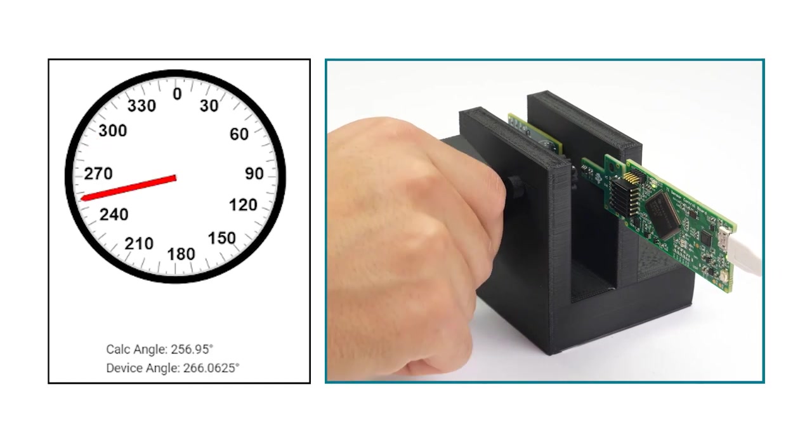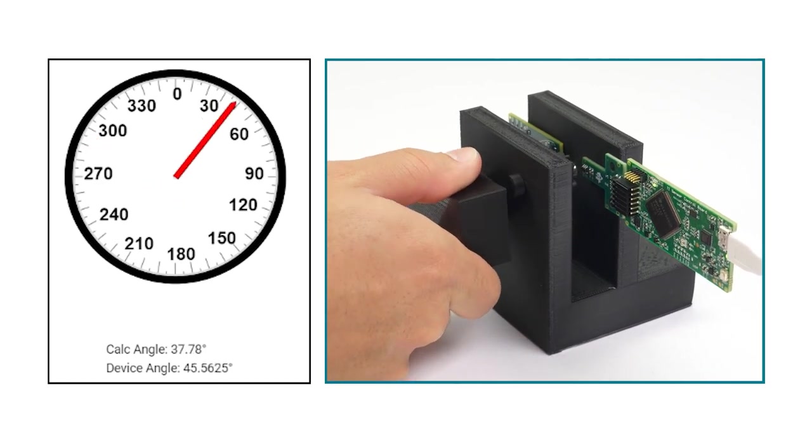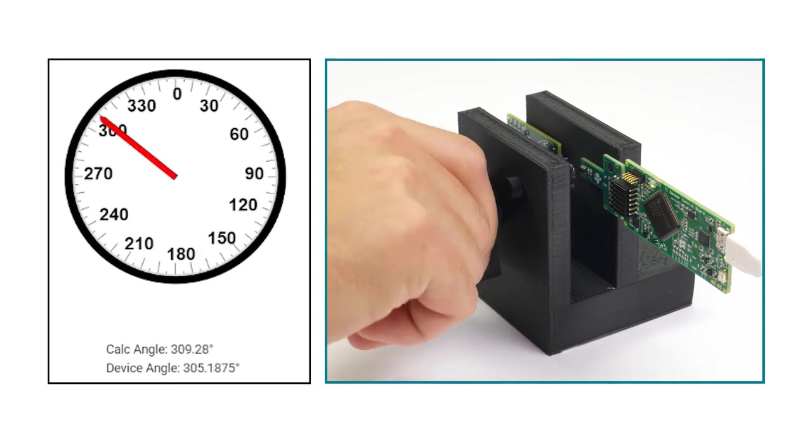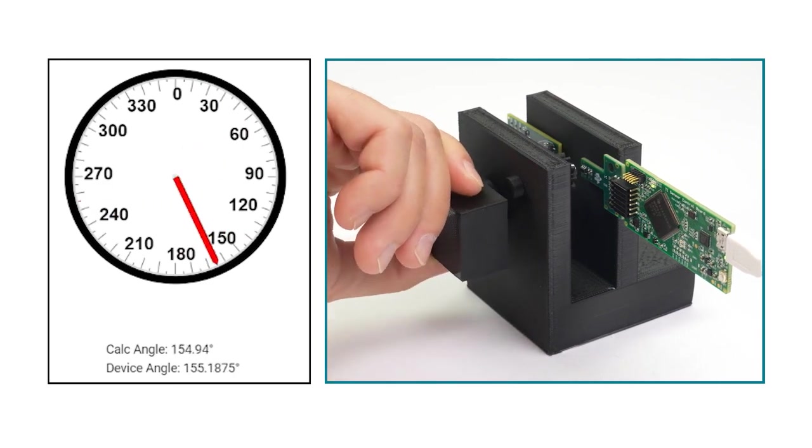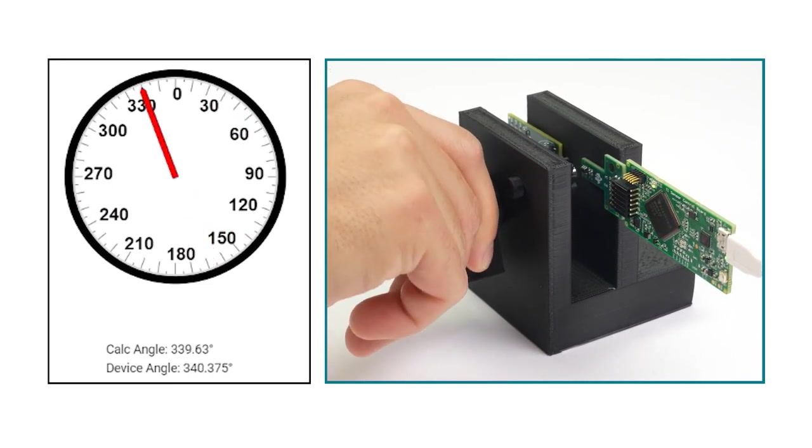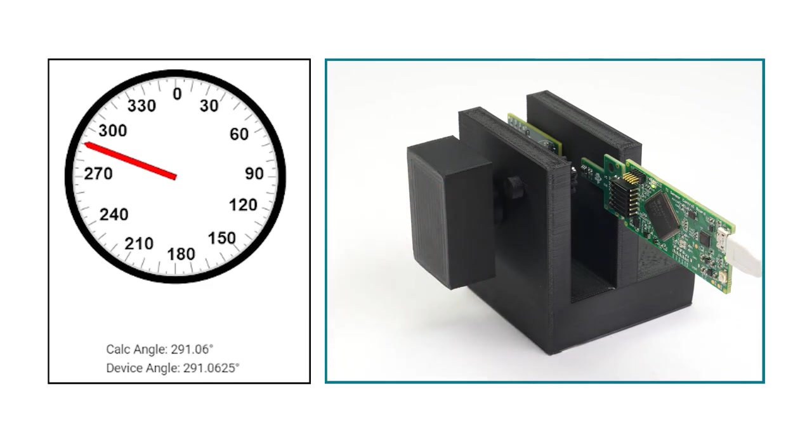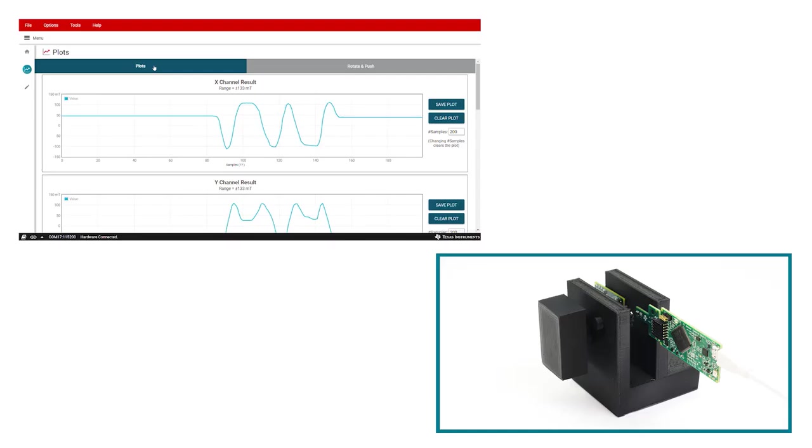As you can see here, the gear ratio in this example causes the magnet to rotate about 2.5 times more than the lock center shaft. The rotational data from the hall sensor can either be viewed by looking at the angle measurement from the device or by looking directly at the change in the magnetic fields as the magnet rotates.